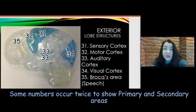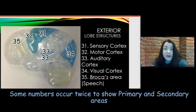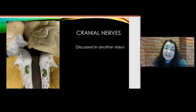Number 33 on the purple nervous model is the auditory cortex. Number 34 is the visual cortex at the occipital lobe. Number 35 is Broca's area, which is responsible for speech. Going further down the exterior of the brain model you will see cranial nerves — there is a separate video covering those.